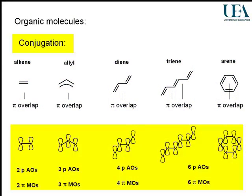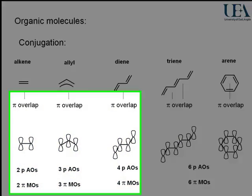So conjugation is the overlap of pi electron density between adjacent regions where there is unsaturation in a structure.